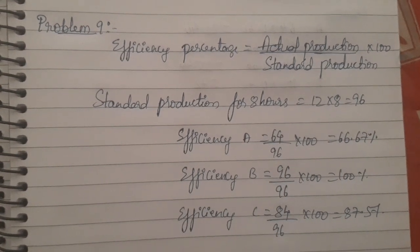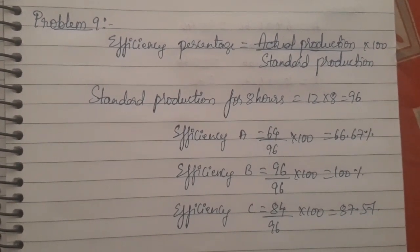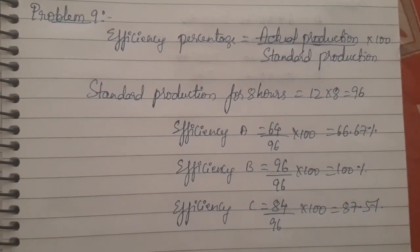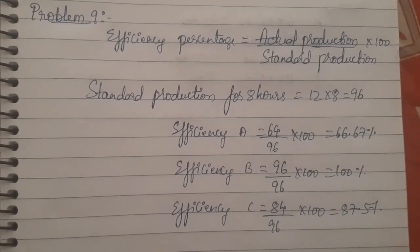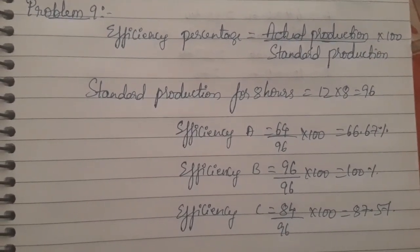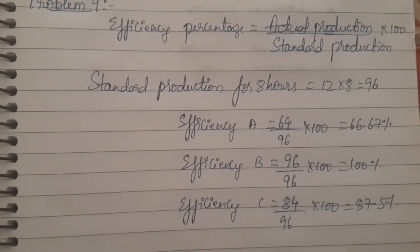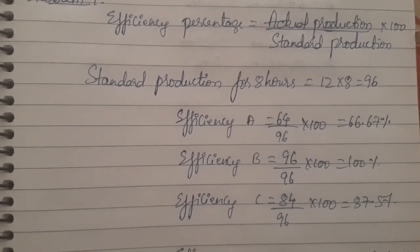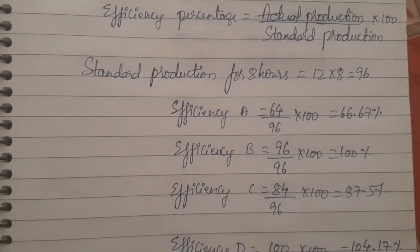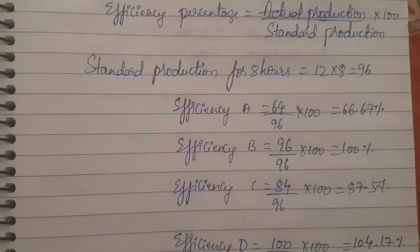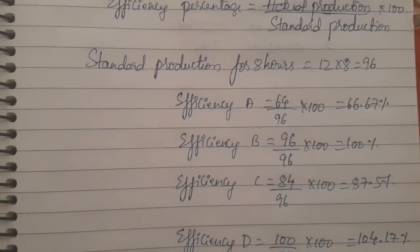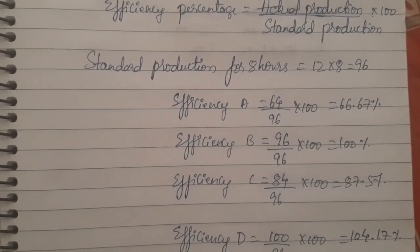To find earnings, we first calculate each worker's efficiency percentage. The formula is: actual production ÷ standard production × 100. Standard production for eight hours = 12 units per hour × 8 hours = 96 units. Efficiency of worker A = 64 ÷ 96 × 100.